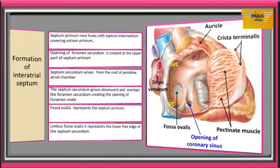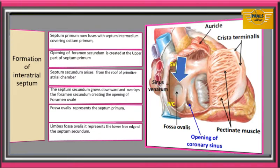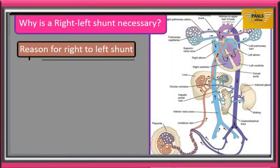This is an image of a fully developed heart. This is the interatrial septum. Here is the fossa ovale — it represents the septum primum. This is called limbus fossa ovale, and it represents the lower free edge of septum secundum. The big question is why is a right-to-left shunt necessary, as we see blood moving from the right side of the atrium to the left? We can notice that in the course of the formation of the interatrial septum, at every point an opening between the two atria is ensured — ranging from foramen primum to foramen secundum and now foramen ovale.